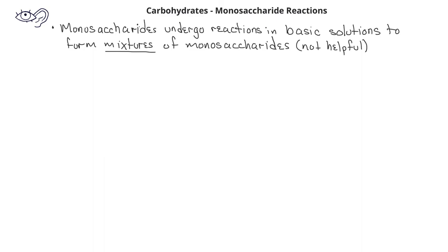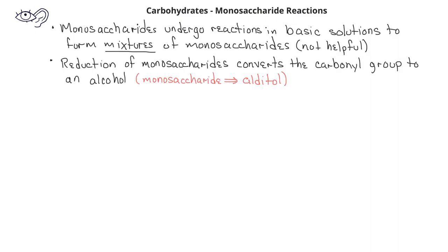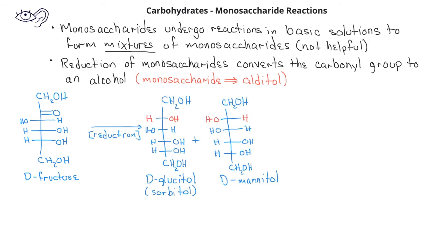Monosaccharides can undergo a variety of different types of reactions. In basic solutions, monosaccharides will react to form mixtures of monosaccharides, so we won't pay too much attention to these kinds of reactions since they are less useful to us. Monosaccharides can also be oxidized or reduced. Reduction of the carbonyl group forms what's known as an alditol, as the carbonyl is reduced to an alcohol. For example, if we have D-fructose, this can be reduced to form both D-glucitol and D-mannitol. D-glucitol is a sugar substitute, sometimes known as sorbitol. Aldoses, when they are reduced, will form just one alditol.